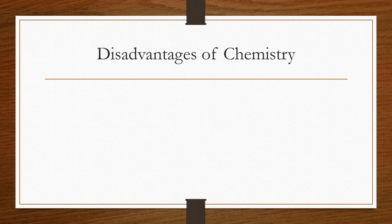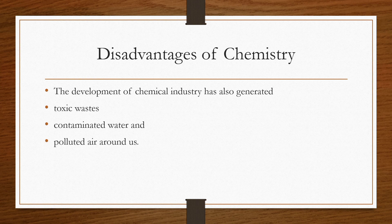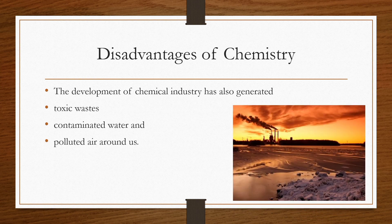Disadvantages of chemistry: The development of chemical industry has also generated toxic wastes, contaminated water and polluted air around us. When chemical industries make products for our use, they also release toxic wastes, contaminated water which is poison-mixed water, and toxic smoke.